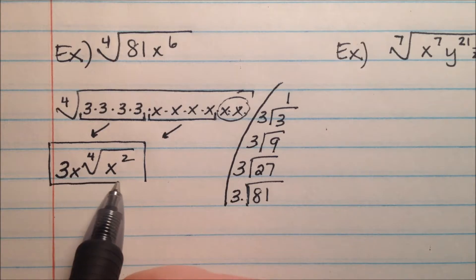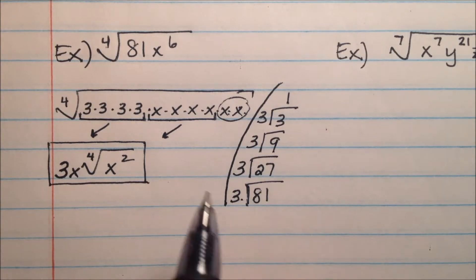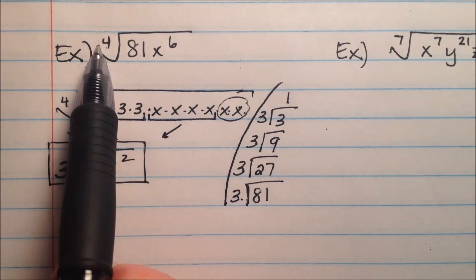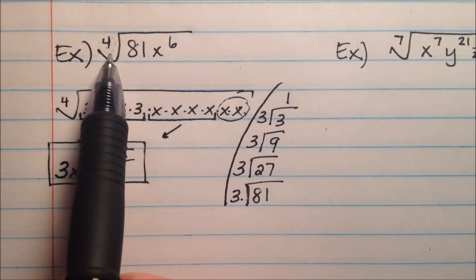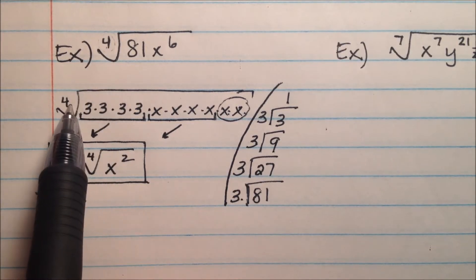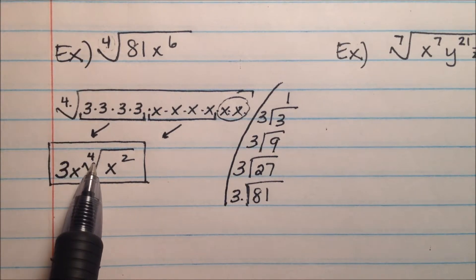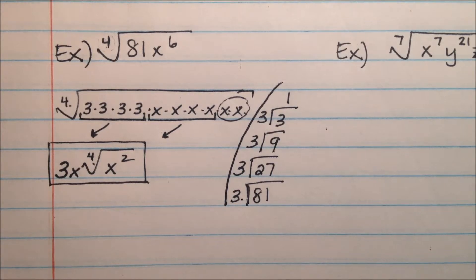I will say that the thing that I see most students forget to do is, when this index is there, and it's something other than just a 2, they forget to put it down in their answer. So make sure that when you're taking these higher index values, that you actually carry them down and put it in your answer as well.